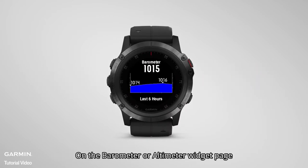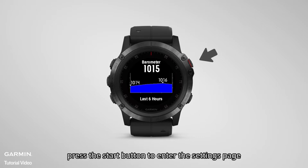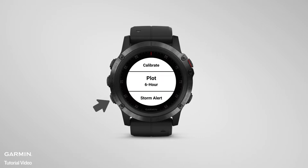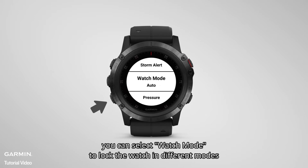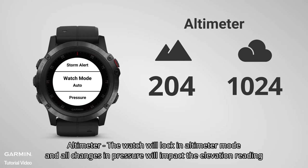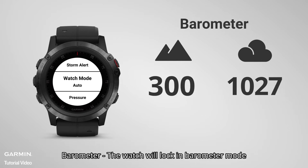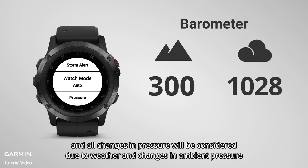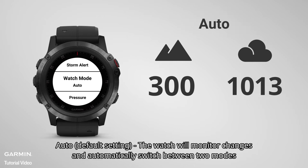On the barometer or altimeter widget page, press the start button to enter the setting page. You can select watch mode to lock the watch in different modes. Altimeter: the watch will lock in altimeter mode and all changes in pressure will impact the elevation reading. Barometer: the watch will lock in barometer mode and all changes in pressure will be considered due to weather and changes in ambient pressure. Auto: the watch will monitor changes and automatically switch between the two modes.